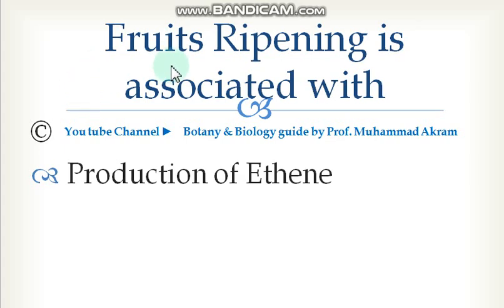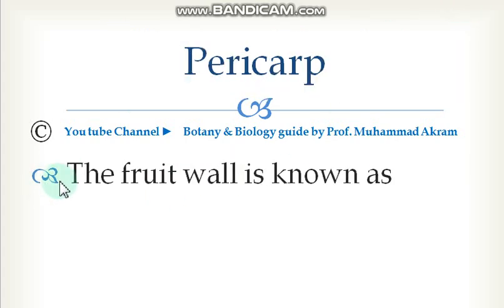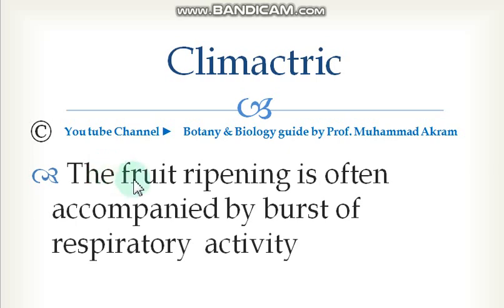The fruit ripening is associated with the production of the plant hormone ethene. The wall of a fruit is known as pericarp — pericarp is the fruit wall. Fruit ripening is often accompanied by a burst of respiratory activity; this is known as the climacteric.